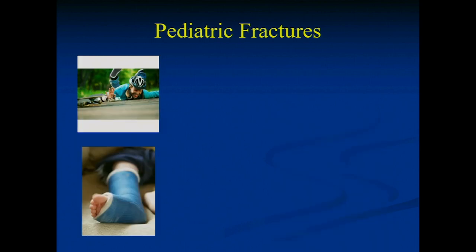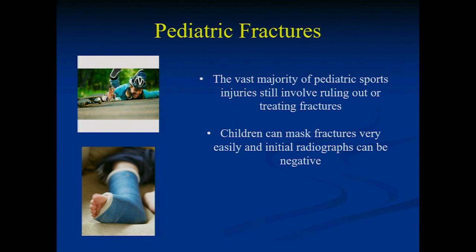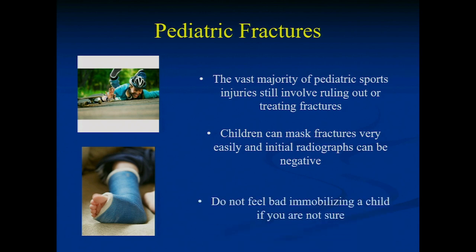Pediatric fractures are still the most common sports injury we'll see. About 75% of sports injuries in kids are fractures, not ligament or soft tissue injuries. Children can mask fractures easily — an initial X-ray can be normal, but a week later you'll actually see the fracture. So if you're concerned, have them come back in a week for a repeat X-ray. And don't worry about immobilizing kids — they don't get stiff, so err on the side of putting on the cast or splint.